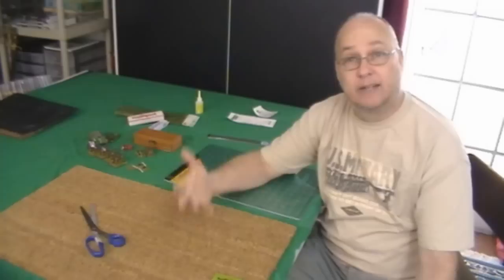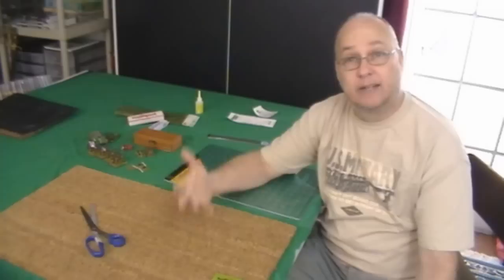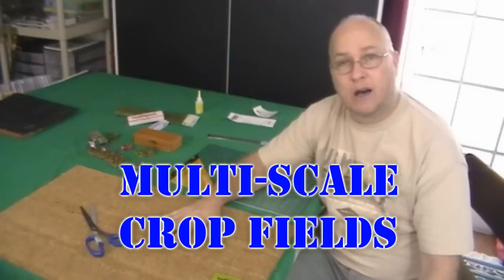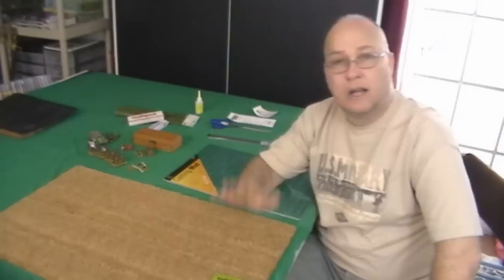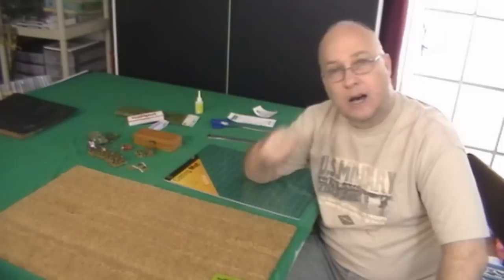What I want to do is show you that you can make certain terrain that can be used with a variety of different scales. Specifically fields, and today we're going to be focusing on plowed fields or crop fields - things like wheat or any other kind of crop that you would see on a battlefield. I want to show you some household items that you can use that will make it easier to do a crop field.